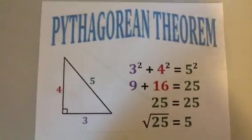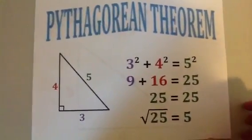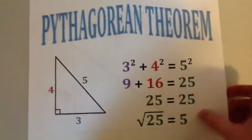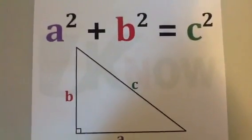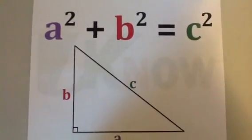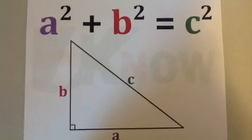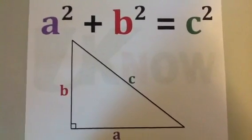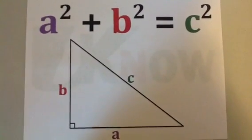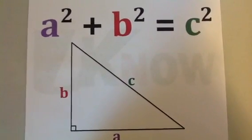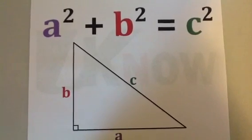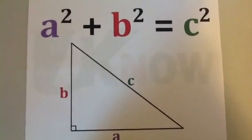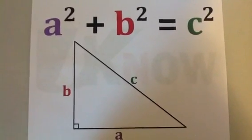So, if you remember the Pythagorean Theorem, I have a short song for you. It goes something like this: A squared plus B squared equals C squared, by Pythagorean Theorem.